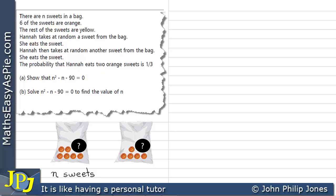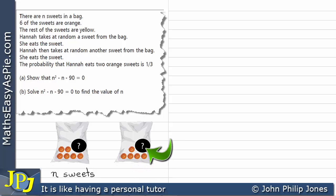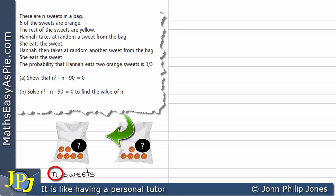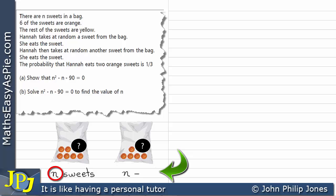Let's visualize what happens when Hannah takes a sweet from the bag. You can see a sweet is now missing — it's just been removed. We now have five orange sweets left, and the question mark still represents the unknown number of yellow sweets. Compared to the original bag, this one has one less sweet in it. Consequently, the number of sweets in this bag is N minus one.